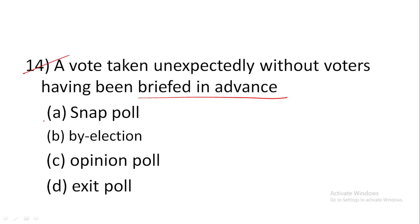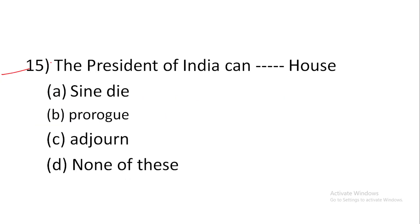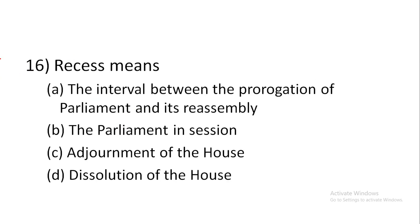Question 14: A vote taken unexpectedly without voters having been briefed in advance — answer is A, snap poll. Question 15: The President of India can — answer is B, prorogue.